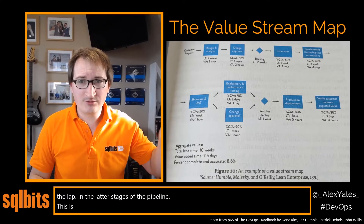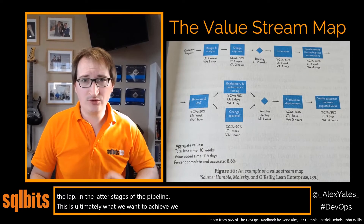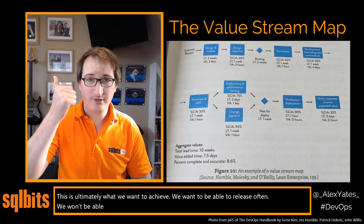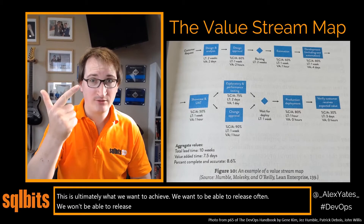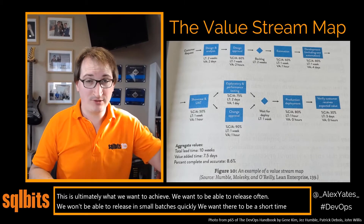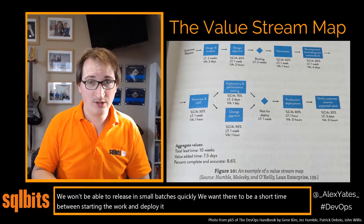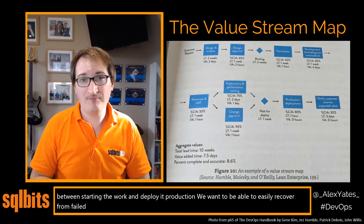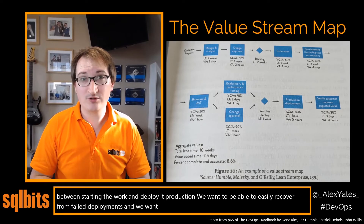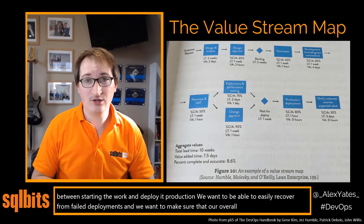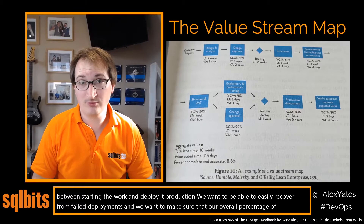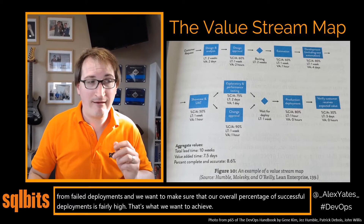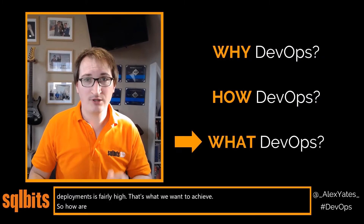This is ultimately what we want to achieve: release often, release in small batches quickly, have a short time between starting work and deploying to production, be able to easily recover from failed deployments, and make sure our overall percentage of successful deployments is fairly high. So how are we going to do it?